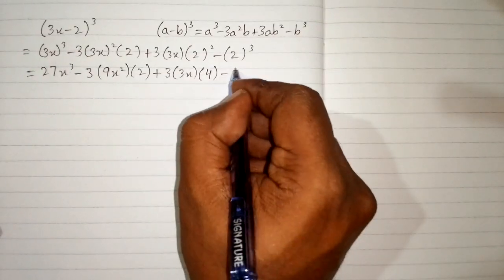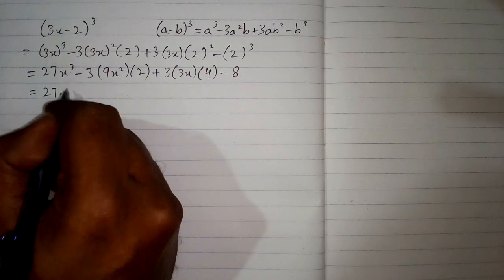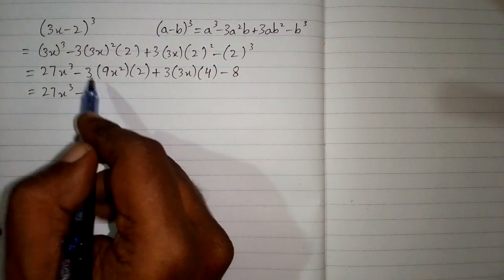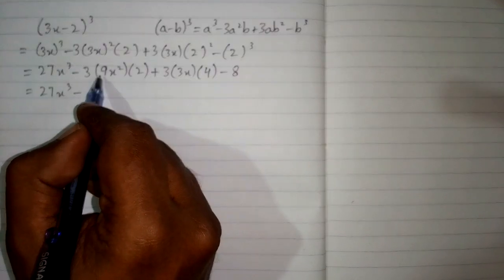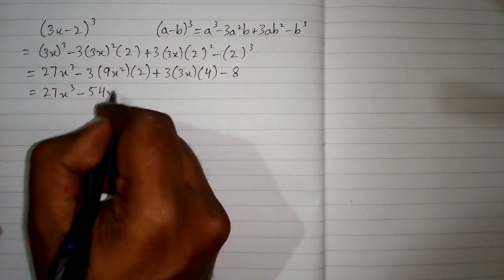Now we have 27x cube minus. Now 3 times 9 is 27 and 27 times 2 is 54. So we have 54x square.